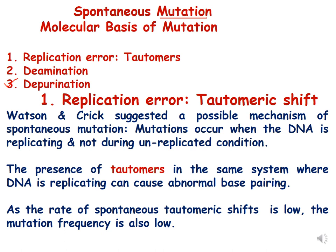In replication error, due to tautomeric shifts of bases, Watson and Crick suggested that a possible mechanism of spontaneous mutation is that it happens in DNA when it is in a replicating state and not in an unreplicated state. It happens because of the presence of tautomers of bases, which can cause abnormal base pairing. The rate of spontaneous tautomeric shifts is low, and because of this the mutation frequency is also low.